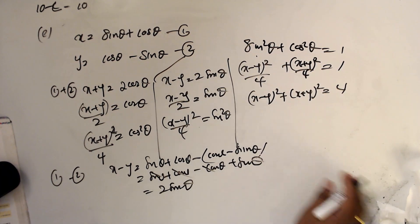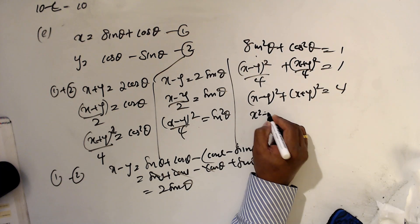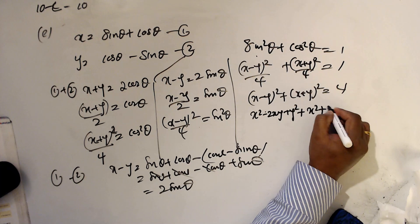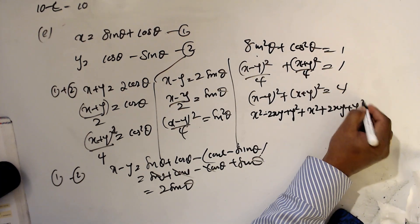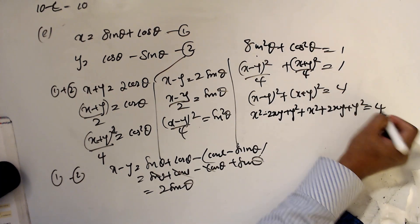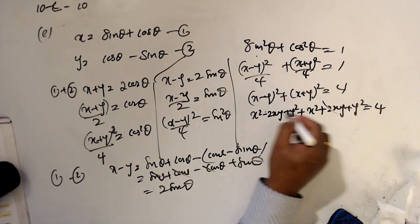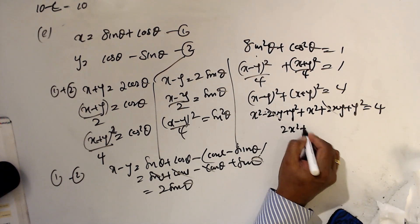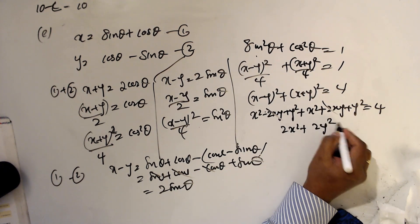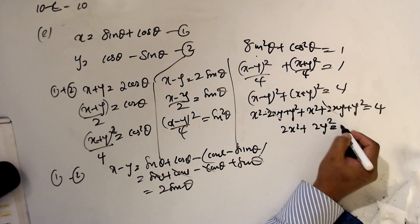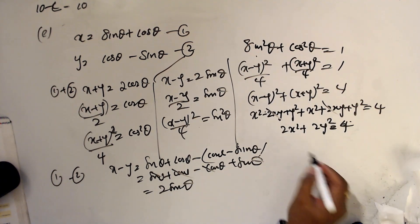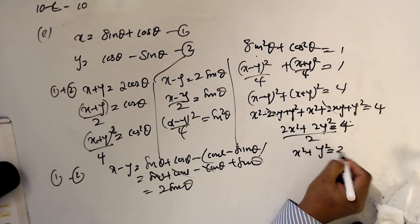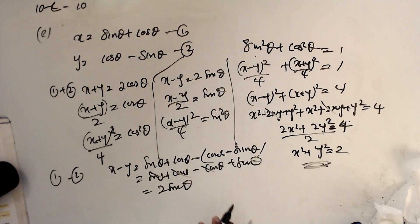Expanding: (x² - 2xy + y²) + (x² + 2xy + y²) = 4. The 2xy terms cancel, leaving 2x² + 2y² = 4. Dividing by 2: x² + y² = 2. This is a circle.